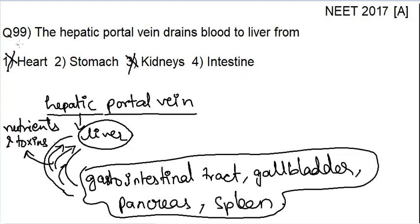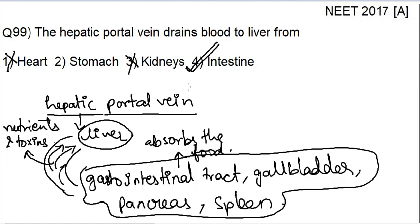Basically, this question is somewhat a flaw — both stomach and intestine can be the answer. But because this is an exam, you have to pick the most appropriate answer. The most appropriate answer is option 4, that is intestine. The gastrointestinal tract refers to that part of the digestive system that actually absorbs the food. Maximum absorption takes place in the intestine.